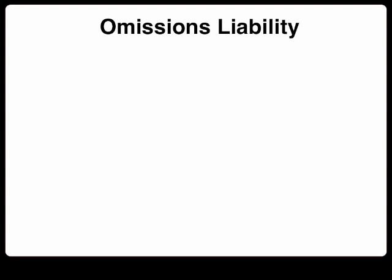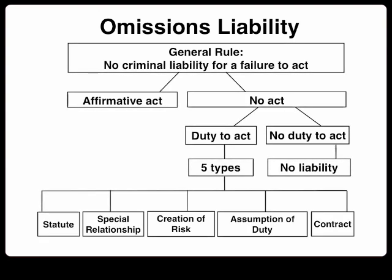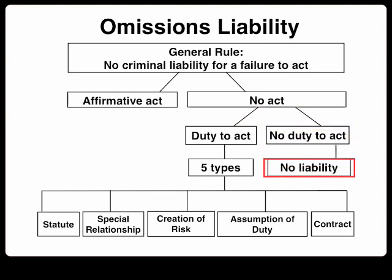A second issue, and a fascinating one, raises the question: when can a person be guilty of a crime not because of some act that they have committed, but because they failed to do something? This is called omissions liability. The general rule is that you cannot be guilty of a crime if you failed to do something. But, as is often the case in law, the interesting issues arise with the exceptions to this rule.